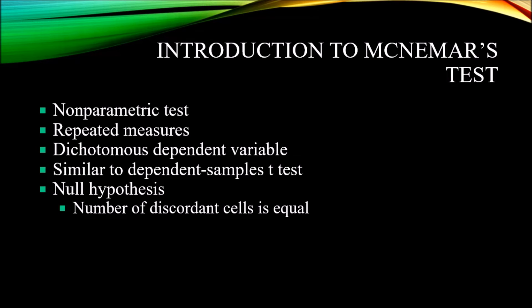With the McNemar's test, we're only interested in the discordant cells. The concordant cells do not go into the calculation, only the times when there was a change. So, the null hypothesis for a McNemar's test is the number of discordant cells is equal.